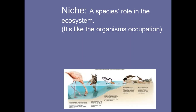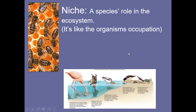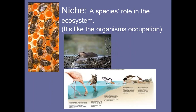A niche — some people call it 'niche,' some call it 'nitch,' I use both depending on what I feel like. A niche is a species' role in an ecosystem — it's like the occupation or the job of that organism. A flamingo feeds on small mollusks and crustaceans at the bottom of the pond — that's its niche. Bees go find pollen or nectar and make it into honey — that's their niche. The beaver's niche is to find logs and make dams.